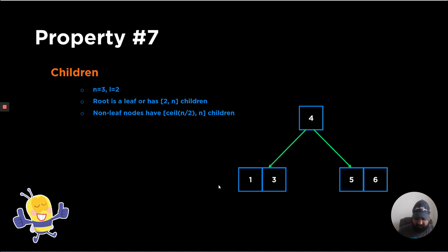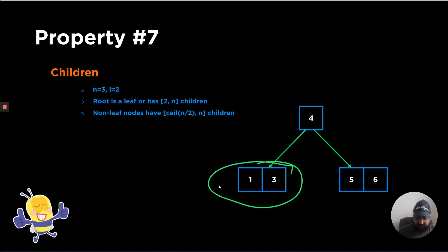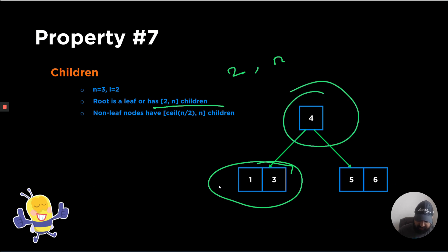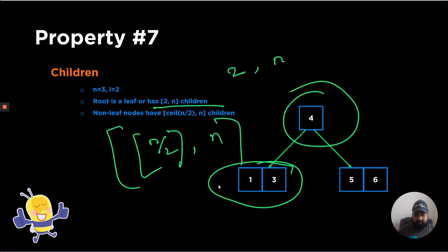The last property concerns children constraints. The root node can be a leaf — that's perfectly fine. All other nodes have a minimum of two children and a maximum of N children. Non-leaf internal nodes specifically can have a minimum of ceil(N/2) children and N as the maximum number of children.